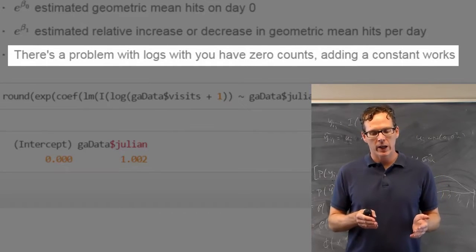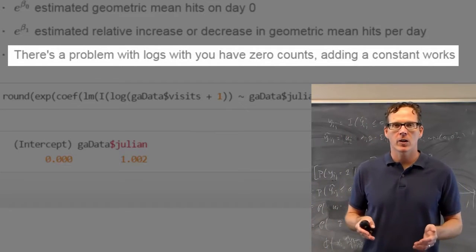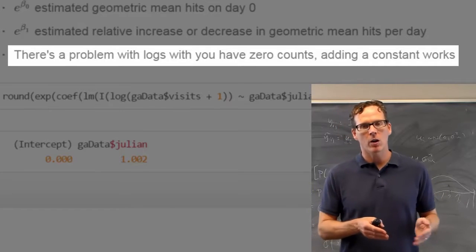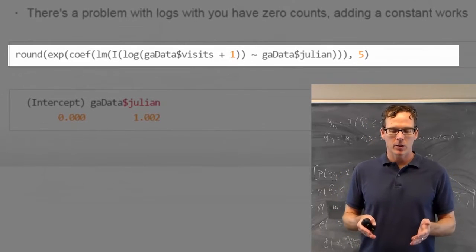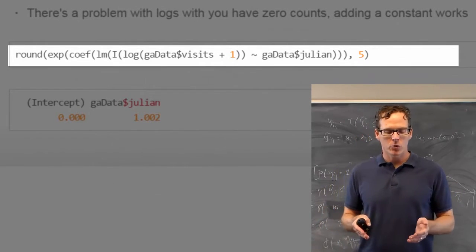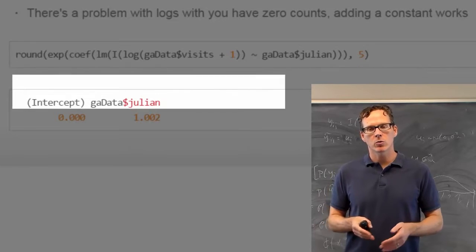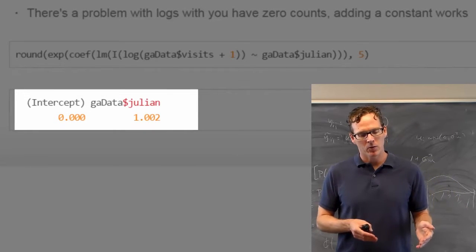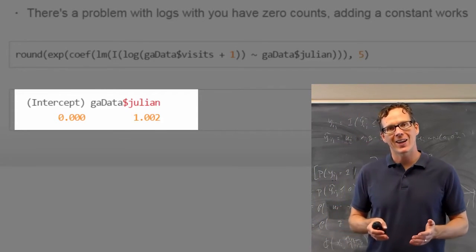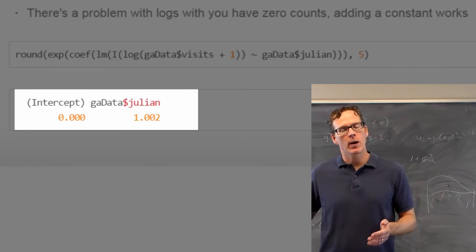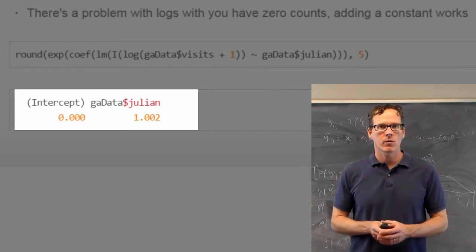If you have zero counts, you have to do something because you can't take the log of zero. So you need to add a constant. A very common constant is plus 1. So we do log of the outcome plus 1. Here I fit the linear model to the log of the outcome plus 1 versus the Julian date. We get the intercept, which is kind of irrelevant in this case, as we talked about before. And then we get 1.002. This is on the exponentiated scale. So what that means is our model is estimating a 0.2% increase in web traffic per day. And that's a nice interpretation. If you added other covariates, then that would be a 0.02% increase per day holding the other covariates fixed.